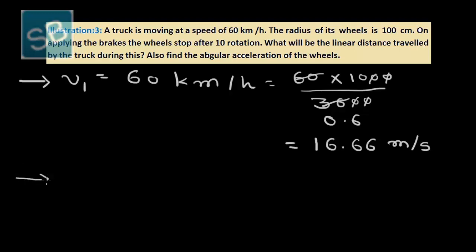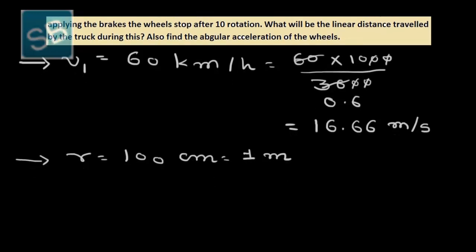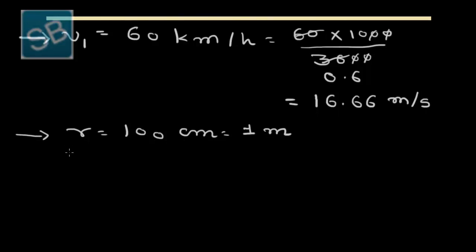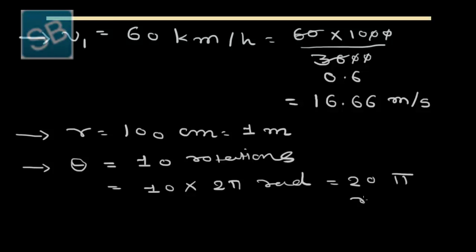The radius of the wheel is given as 100 cm, which equals 1 metre. On applying the brakes, the wheel stops after 10 rotations. Converting to radians: 10 × 2π equals 20π radians, approximately 62.8 radians.